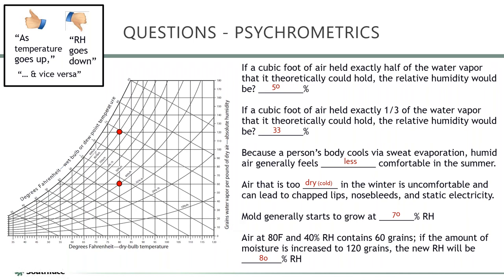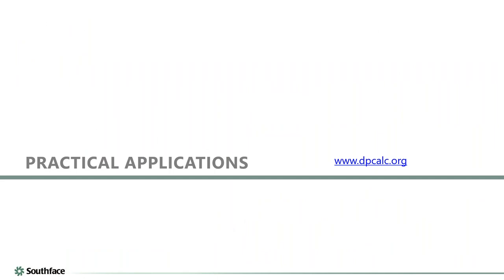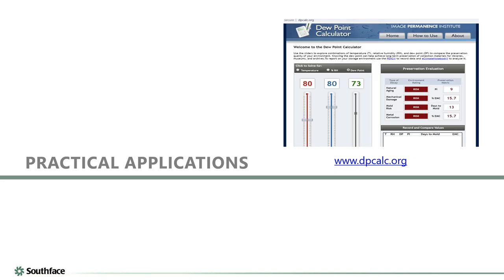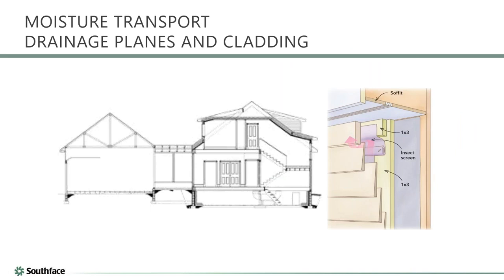There's a cool dew point calculator tool online — a slider where you can set temperature and RH and it tells you the dew point and whether you're at risk of mold growth. A neat resource for building intuition around psychrometrics.